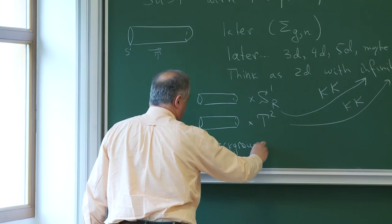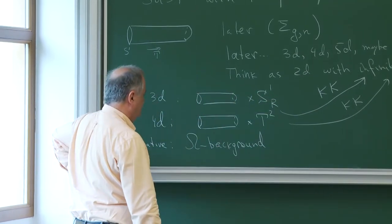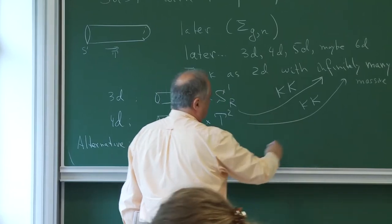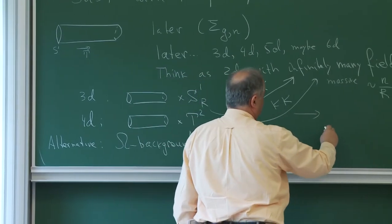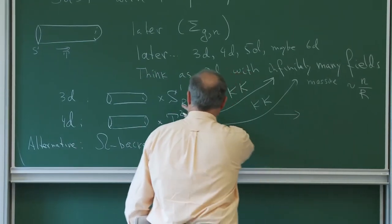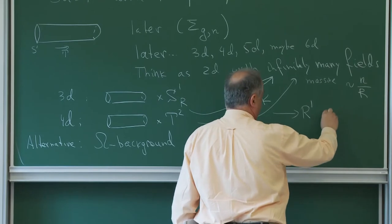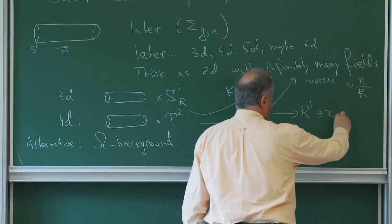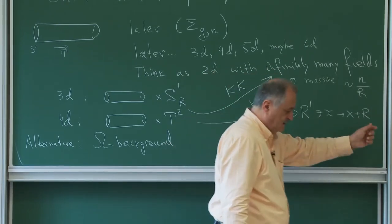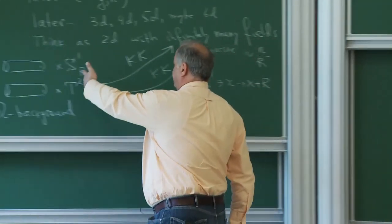The only thing we will need from here — since I assume we are familiar with Kaluza-Klein theories — is that the idea of Kaluza-Klein theories is that we consider identification of space coordinates. Let's take R1: we identify coordinate x and x plus R. This is a shift, so we are using a transformation from the translation group. And that leads us to compactification on a circle.